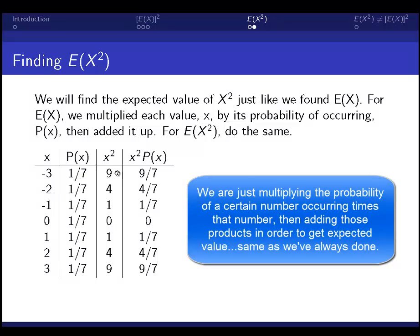If we square that negative 3, our x squared is 9. 9 times that probability gives us 9 7ths. Do that for all of these numbers, where this column is just the square of this column, and this column is this column multiplied by that one.